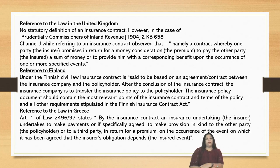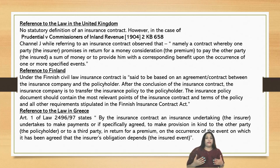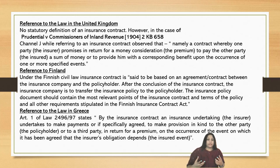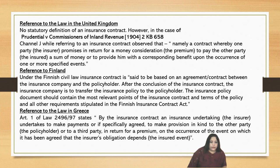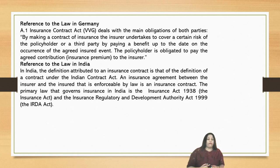Referring to the law in Greece, Article 1 of Law 2496/1997 states that by the insurance contract, an insurance undertaking — an undertaking by the insurer — is that he undertakes to make payments, or if specifically agreed, to make provision in kind to the other party — that is the policyholder — or to the third party, in return for a premium, on the occurrence of the event on which it has been agreed that the insurance obligation depends — that is the insured event. The insurance obligation is triggered on the happening of that particular event.